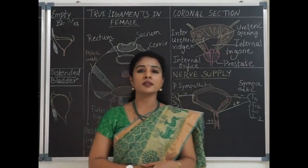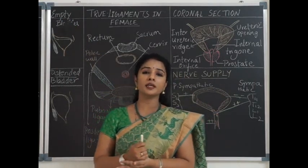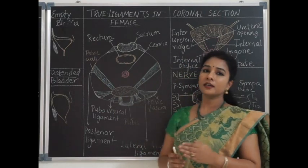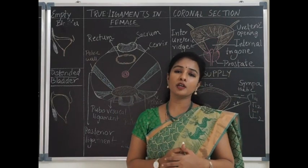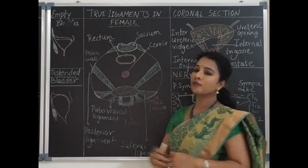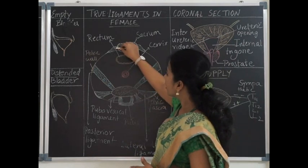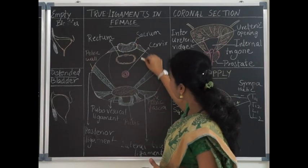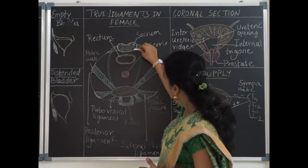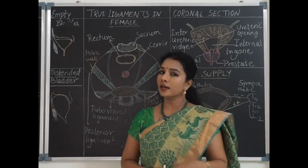The false ligaments are peritoneal folds. The median umbilical ligament is covered by a peritoneal fold called the median umbilical fold. On either side of it are obliterated umbilical arteries covered by peritoneal folds called medial umbilical folds. Laterally there are two lateral peritoneal folds. Posteriorly, peritoneal folds connect the urinary bladder to the sacrum — these are called sacrovesical folds or sacrogenital folds.